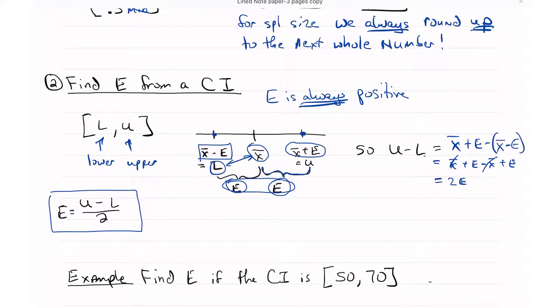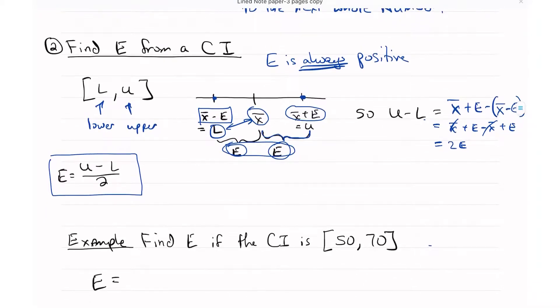In order to get E, this is your formula: take the bigger number minus the smaller number in the confidence interval divided by 2. So E is going to be U minus L divided by 2, which is 70 minus 50 divided by 2, which is 20 divided by 2, which is 10. So E is 10, quite easy to get. This will be an easy question for you to answer on the test. Just make sure you use the right formula, because the formula I'm about to show you is very similar except for the plus sign versus the minus sign.